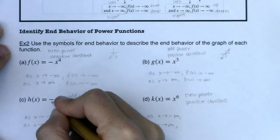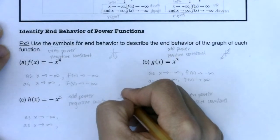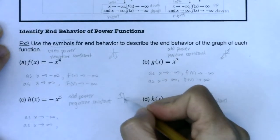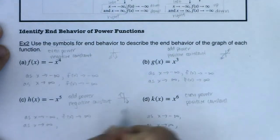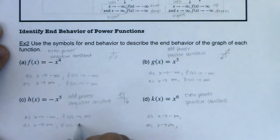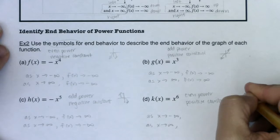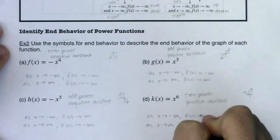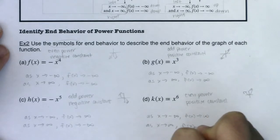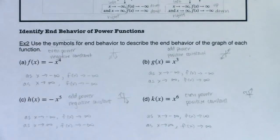For negative coefficient on an odd power, the ends should be opposite and the right end goes down. The left end is up, so f of x goes to positive infinity; the right end is down, so f of x goes to negative infinity. For even power with positive constant, both ends are up, so f of x goes to positive infinity in both directions.